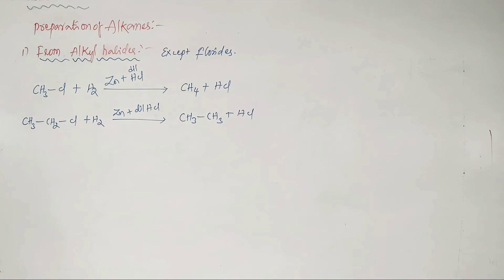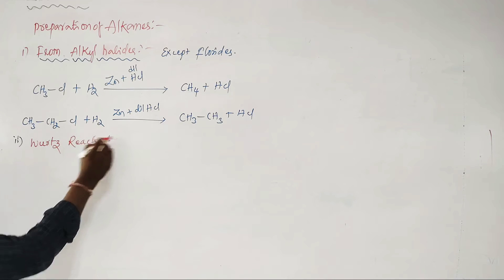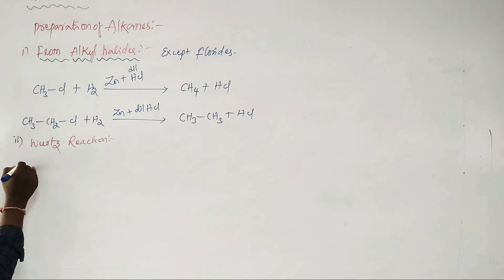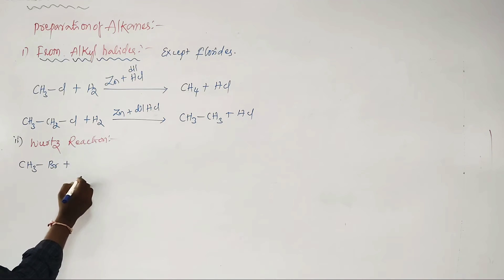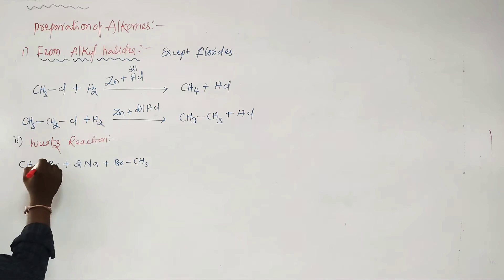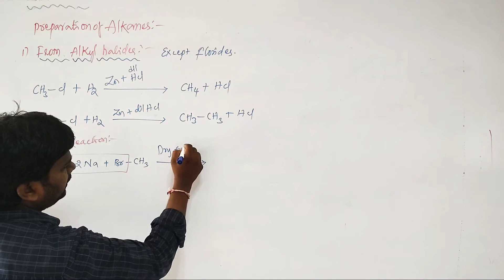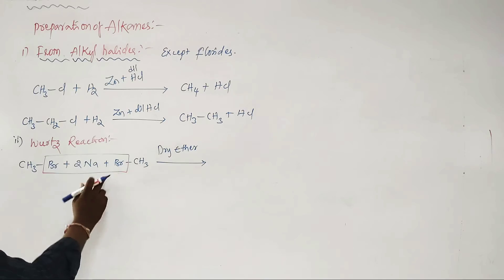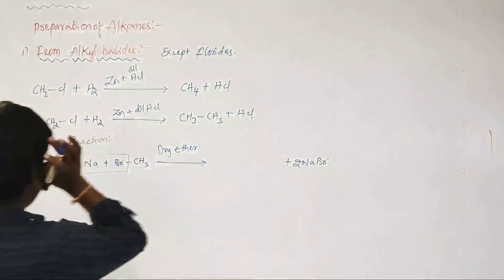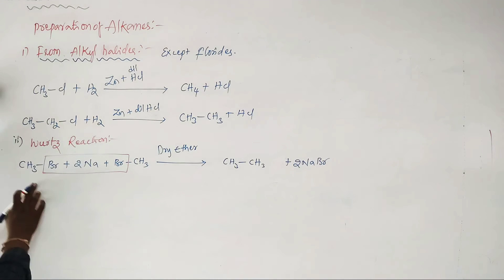This is preparation of alkanes from alkyl halides. The second method also used here is called the Wurtz reaction — an important reaction. In the Wurtz reaction, 2 moles of methyl bromide react with 2 moles of sodium metal in the presence of dry ether only. The 2 Na and 2 Br atoms are removed, forming 2 NaBr, and the remaining CH3 groups combine to give CH3–CH3. So from methyl bromide we get ethane.